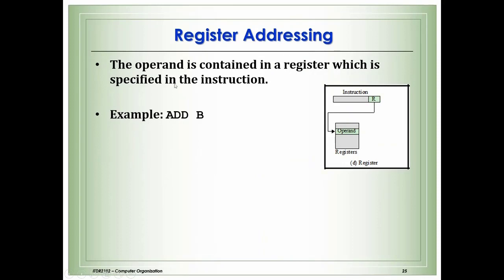Register addressing: the operand is contained in a register specified in the instruction. For example, 'Add B' means add the content of register B — go directly to register B and find the operand there.